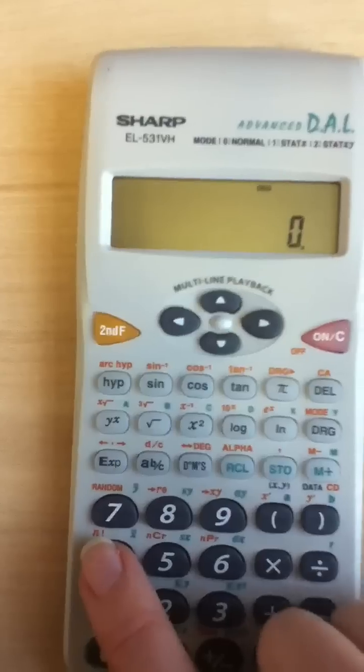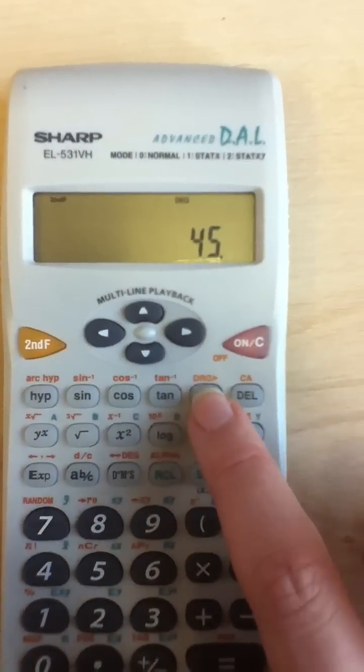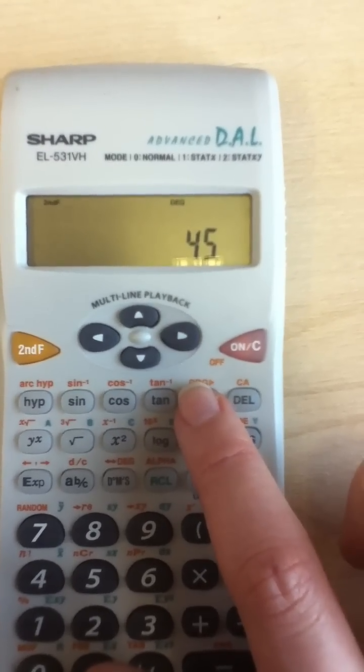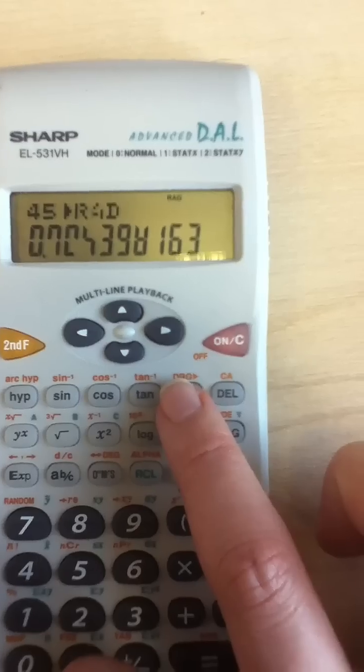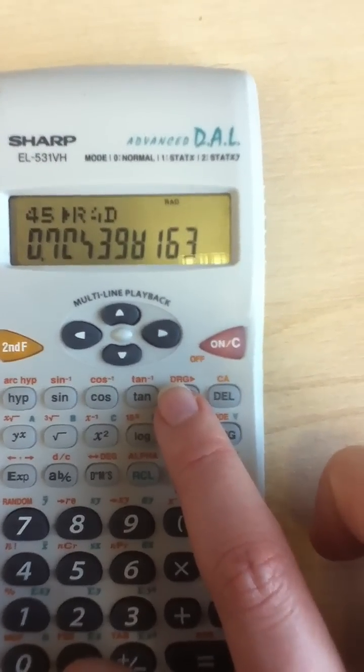Then we're going to type 45 degrees. The way we convert is you press the second function key, and then this button here, and that cycles through degrees to radians. We press it, we can see that 45 degrees in radians is actually 0.785.